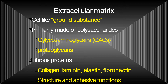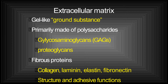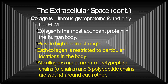In this slide you can see the extracellular matrix, which is gel-like and can also be called ground substance. It is made up of primary polysaccharides, glycosaminoglycans, and proteoglycans. The fibrous proteins include collagen, laminin, elastin, and fibronectin. It has adhesive functions.